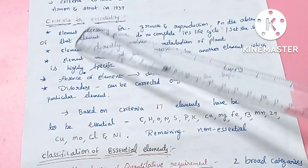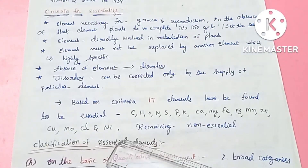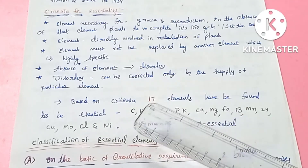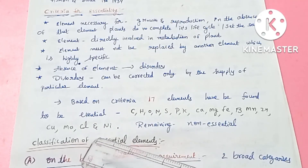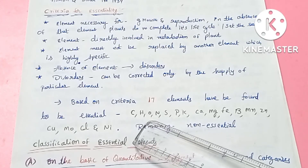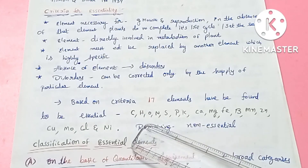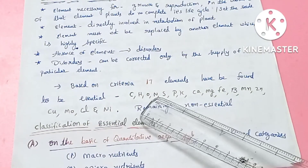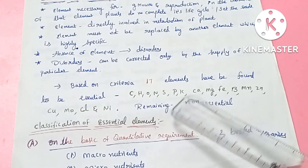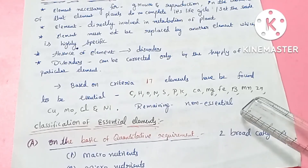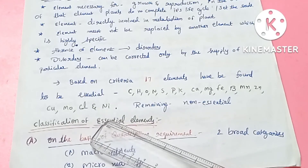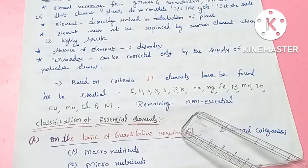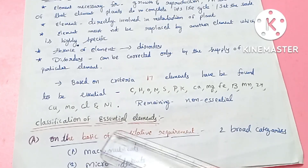Based on these criteria, a total of 17 elements are essential elements. Out of the 60 minerals identified in plants, only 17 are essential. The 17 essential elements are: Carbon, Hydrogen, Oxygen, Nitrogen, Sulphur, Phosphorus, Potassium, Calcium, Magnesium, Iron, Boron, Manganese, Zinc, Copper, Molybdenum, Chlorine, and Nickel. All remaining elements are called non-essential elements. The next video will cover the classification of the essential elements.